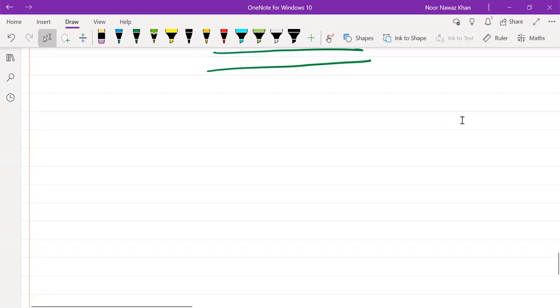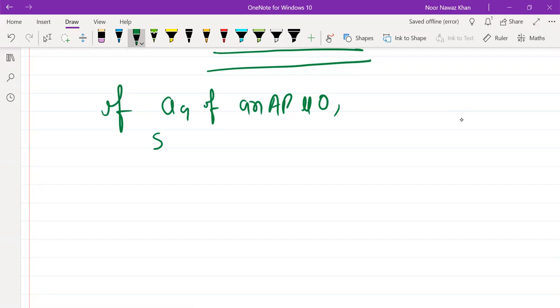If the ninth term of an AP is zero, show that the 29th term is double the 19th term.